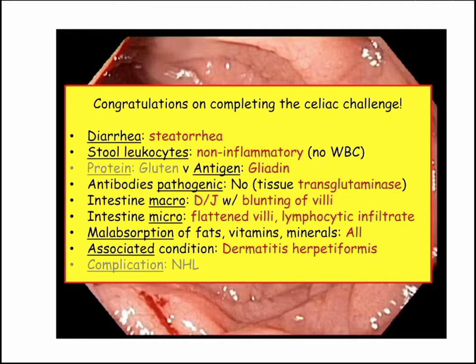It's malabsorptive diarrhea with a non-inflammatory stool. Gluten is the protein; gliadin is the antigenic fraction. It's absorbed across the epithelium and goes through a transglutaminase process where it gets deamidated — a naked, uncoated gliadin. Then an antigen-presenting cell presents it, requiring genetic predisposition. Lymphocytes stimulate B cells to make antibodies, which are present as markers but probably not pathogenic.